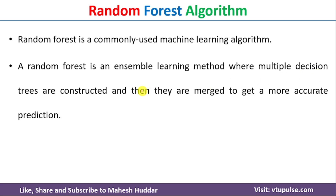The results of multiple decision trees are merged so that we get more accurate predictions. In the traditional decision tree learning algorithm, given a dataset, a single tree is drawn, and whenever we get a new example, it is classified using that single decision tree. But in Random Forest, we draw multiple trees and give the new example as input to each of those decision trees to make better predictions.